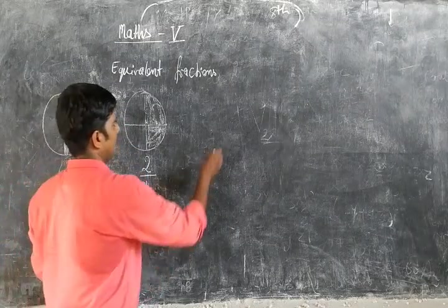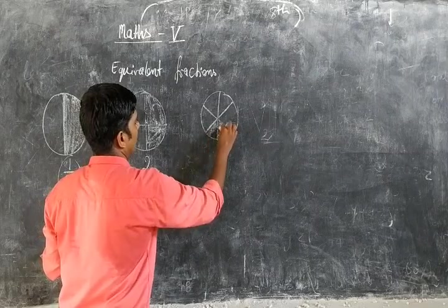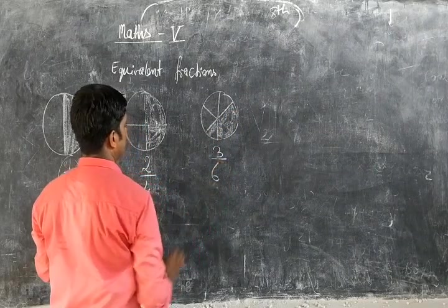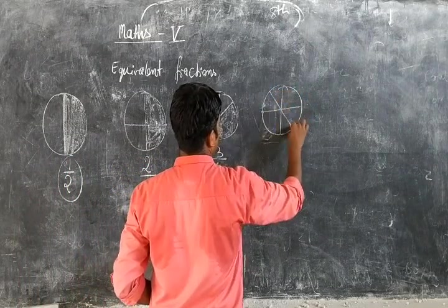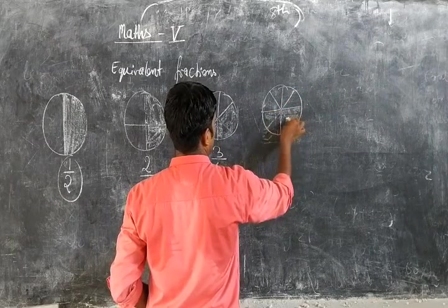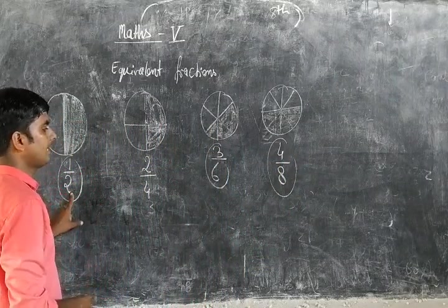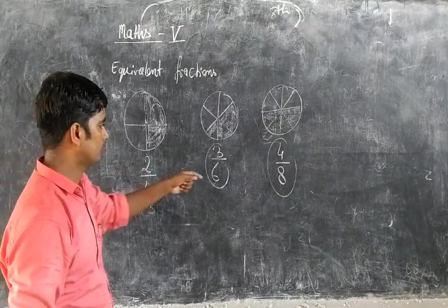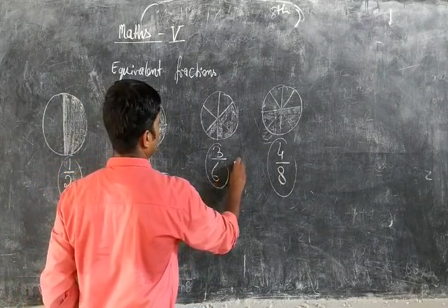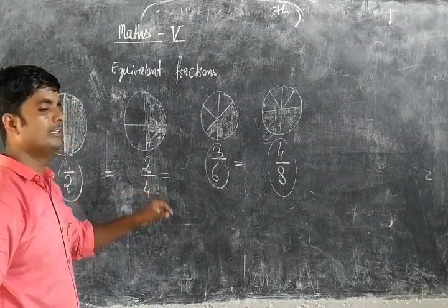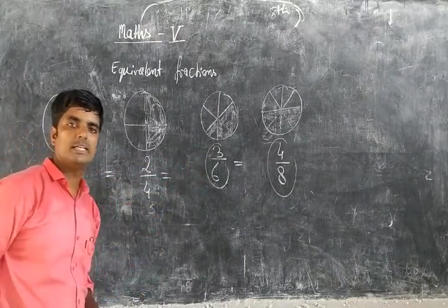But you have the fraction 2 by 4. Similarly, suppose that one thing is divided into six equal parts and we take three parts. We can also divide anything into eight equal parts and take four parts, and write it as 4 by 8. So 1 by 2, 2 by 4, 3 by 6, and 4 by 8 are all equal — these are all equivalent fractions. The numerator and denominator are both changed but the value is equal.